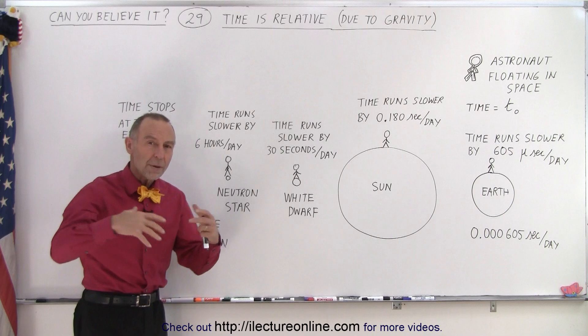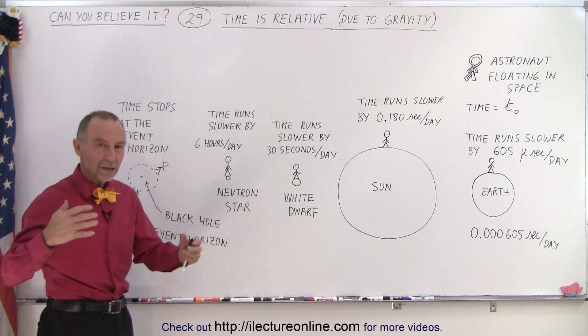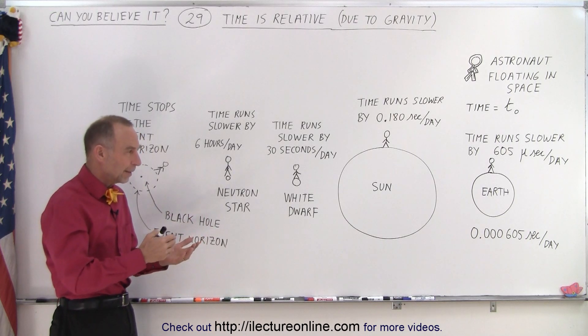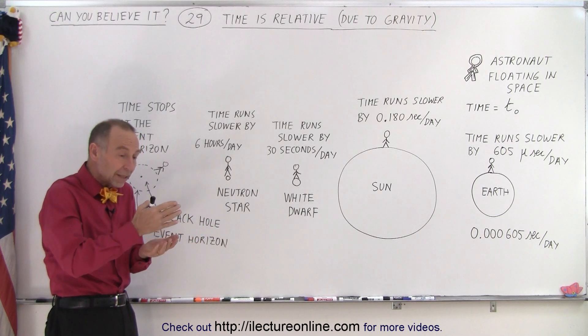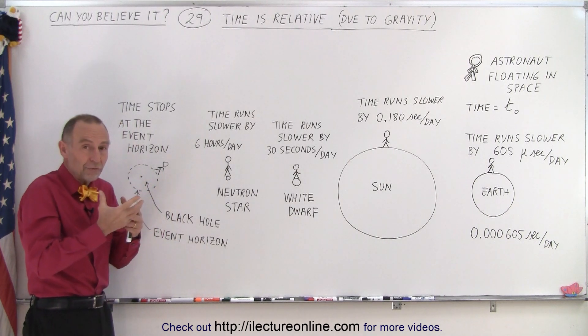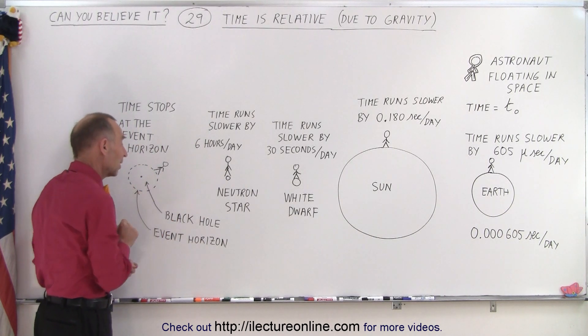So stars would be born and stars would die, planets would come and go, things would erupt, things would disappear, things would be born. So things that would take millions and billions of years would appear to just take just a few moments in the time frame that you're at.